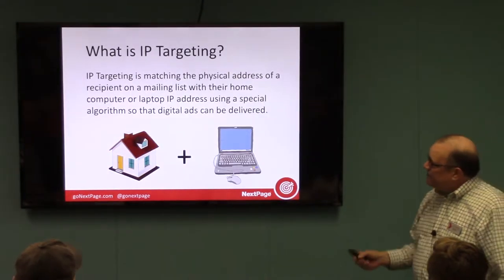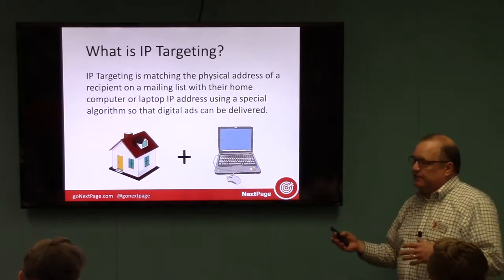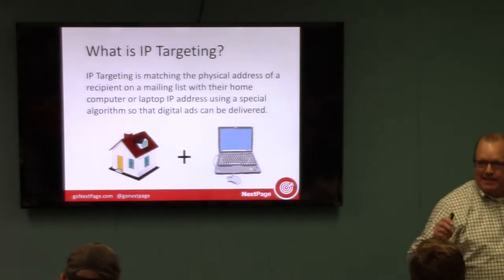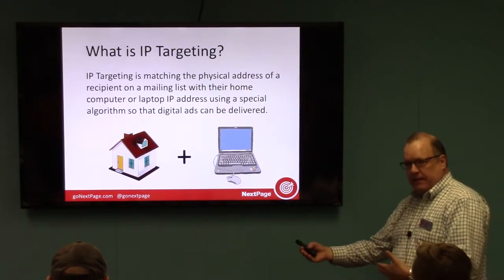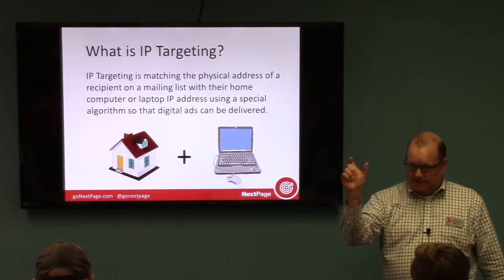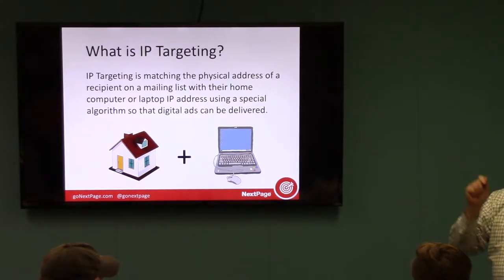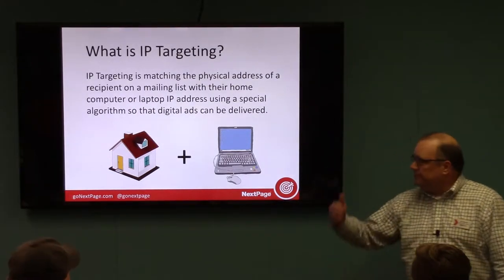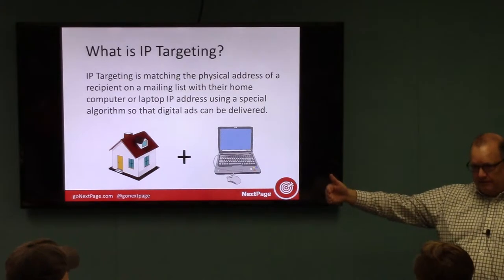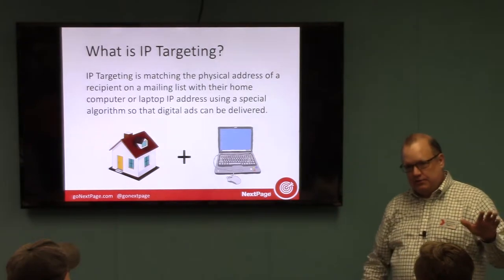IP targeting is matching the physical address of a recipient on a mailing list with their home computer or laptop using a special algorithm, so that digital ads can be delivered. When you have a direct mail list with customers' physical addresses, we run that through an algorithm and get those IP addresses — enabling us to deliver digital advertising to the same folks you sent a direct mail piece to. That impression from the mail piece is followed up with impressions for a month, delivered one-to-one to that specific IP address linked to that physical address.